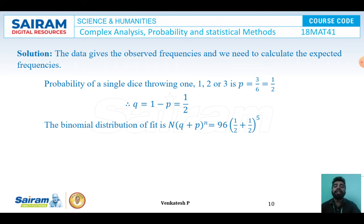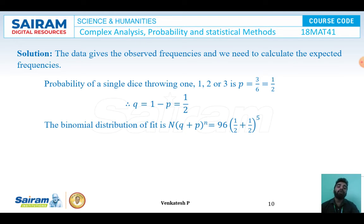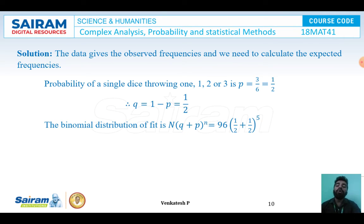To calculate the expected frequency, we frame the binomial distribution formula. Define p as the chance of getting 1, 2, or 3 on a single thrown die. Since there are 6 possible outcomes and 3 favorable ones, p = 3/6 = 1/2. Therefore q = 1 minus p = 1/2.